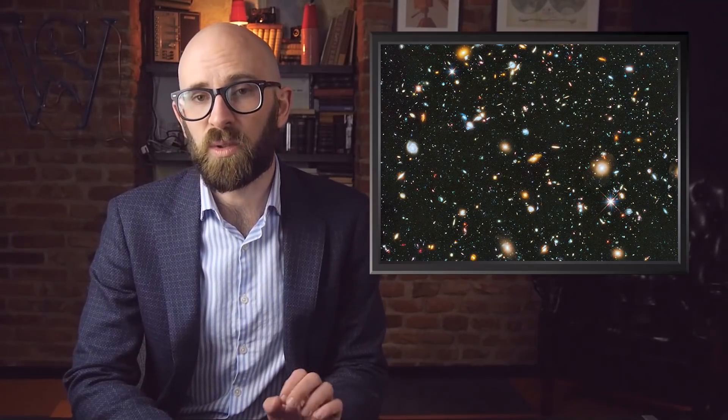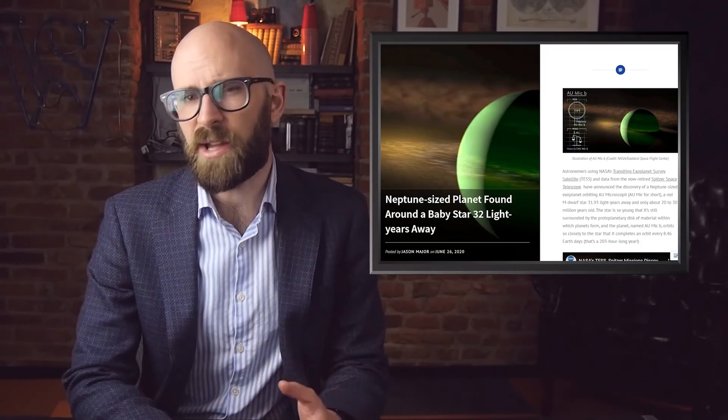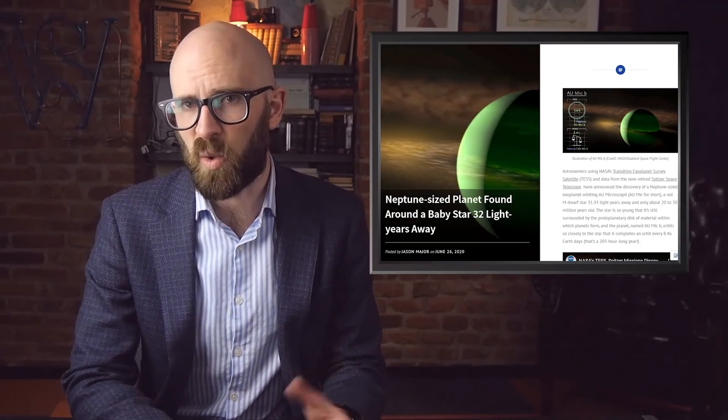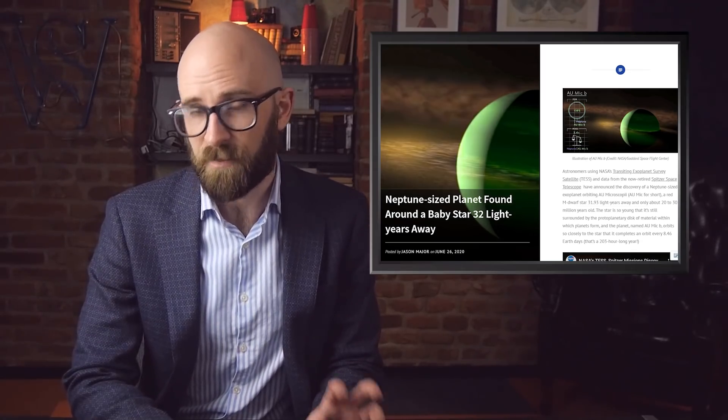5. Baby World. The universe is incredibly old, so the opportunity to study new stars and new planets is not easy. Researchers have an unprecedented opportunity with a planet called AU MICB. The Neptune-sized planet is orbiting a young star known as AU Microscopy. The star is surrounded by a field of debris left over from its formation, and the planet seems to be the first one that has coalesced in the debris field. The star is about 20 million to 30 million years old, ancient in human terms, but incredibly young in stellar terms.